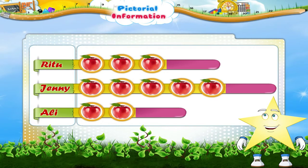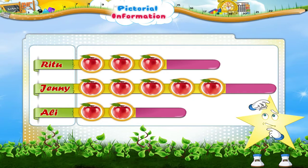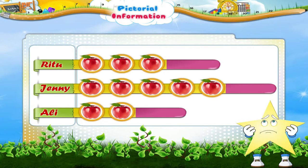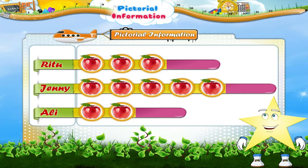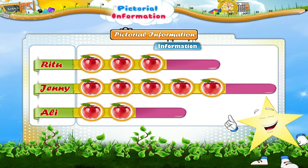Hey Starry! What are you looking at? You look so confused. Don't you know what this is? This is information given in pictures. It is called pictorial information. It gives us a lot of information. Let us learn how to read the information.